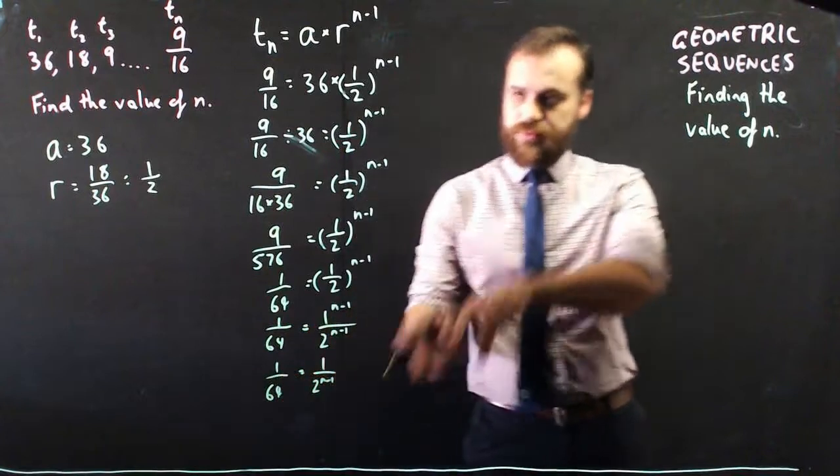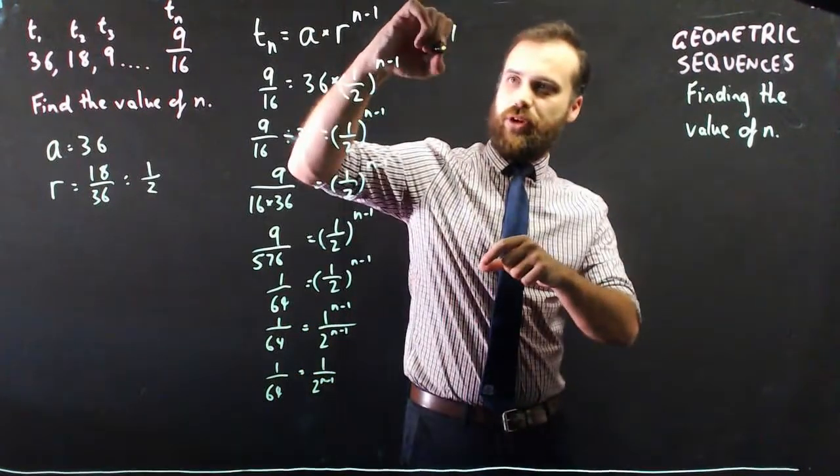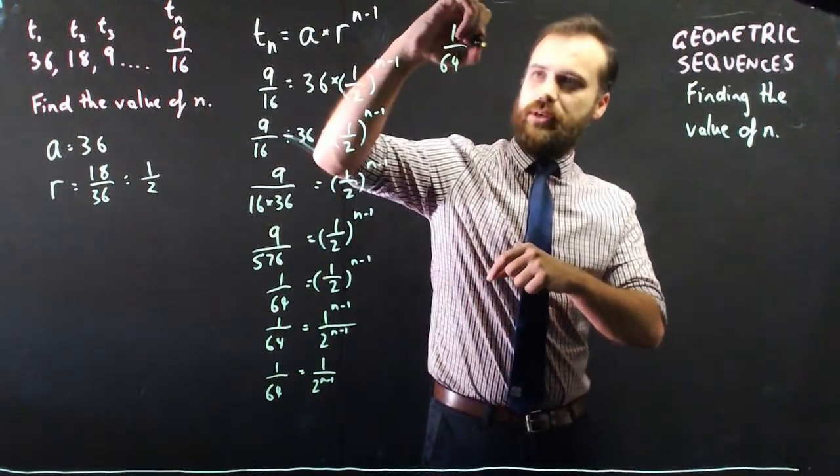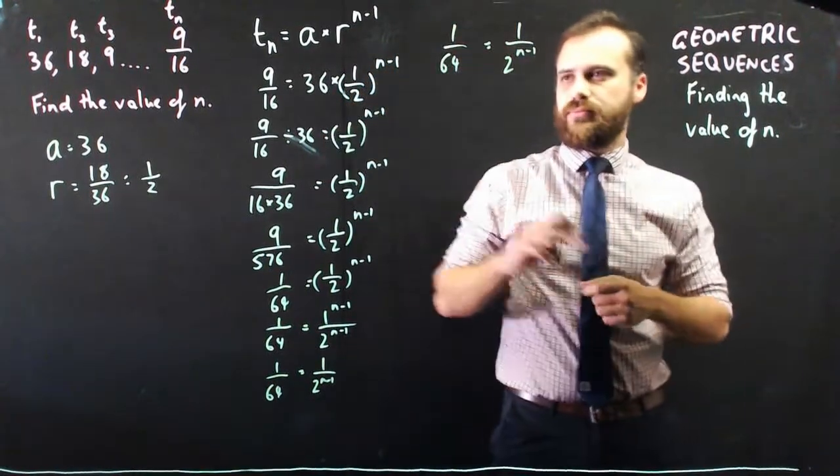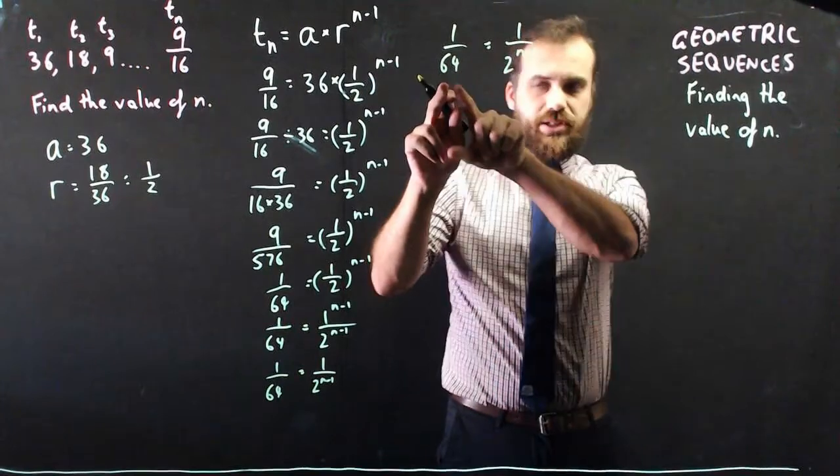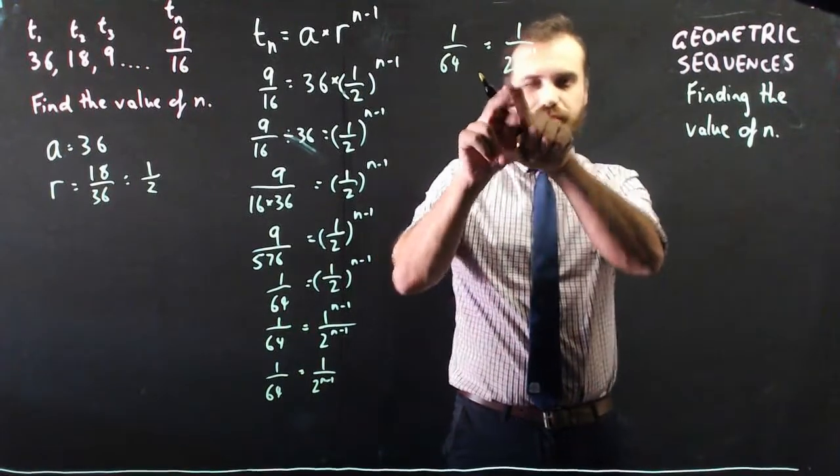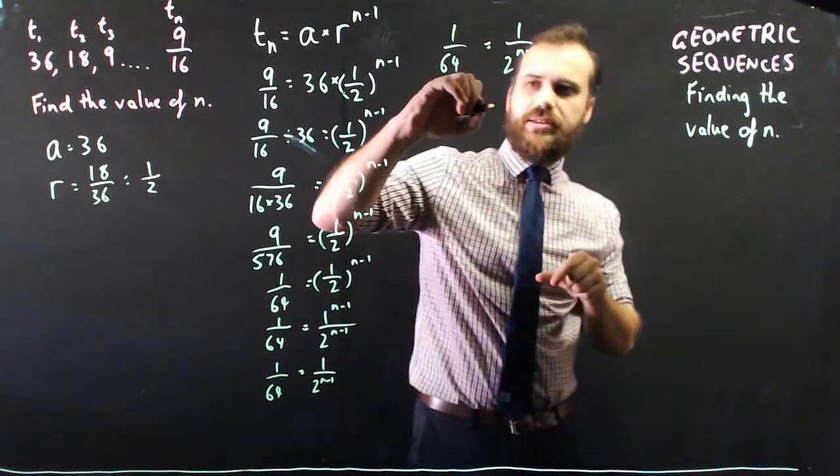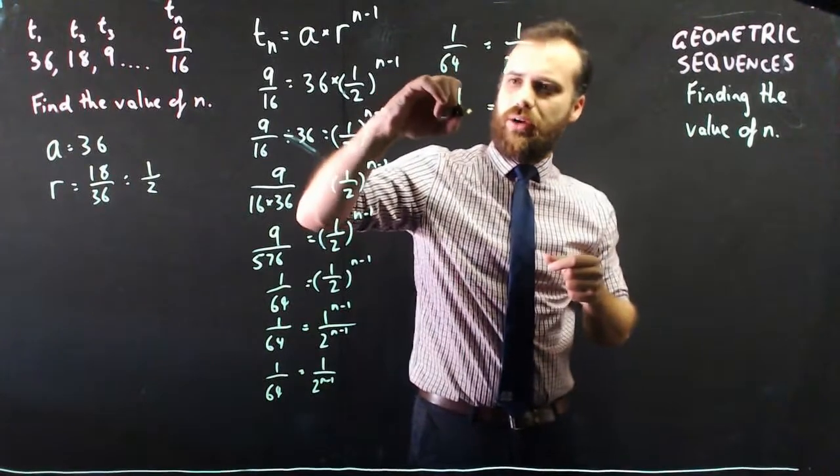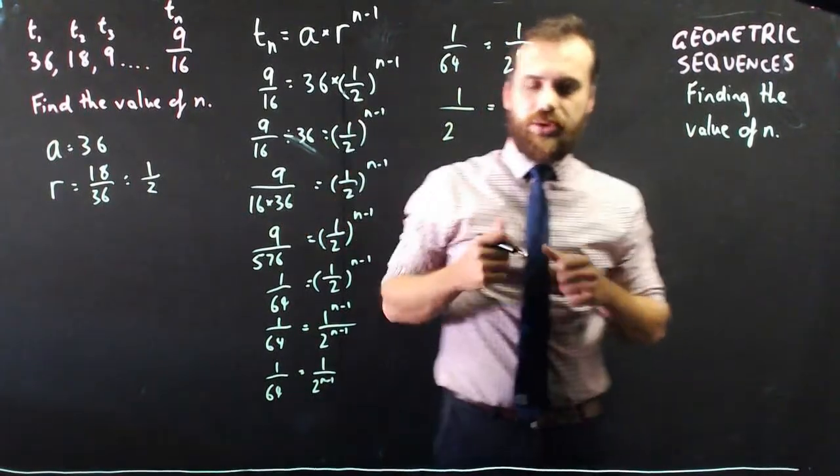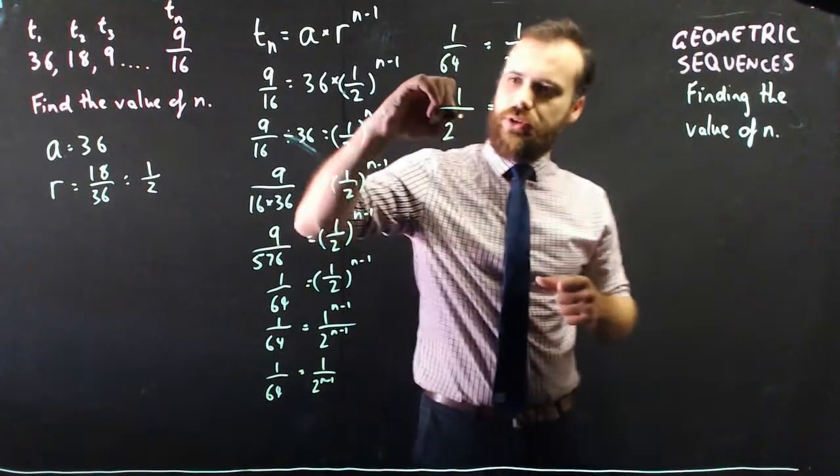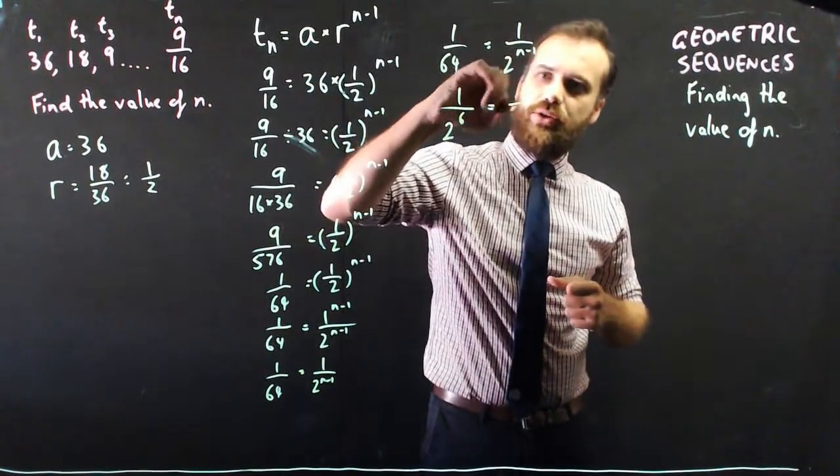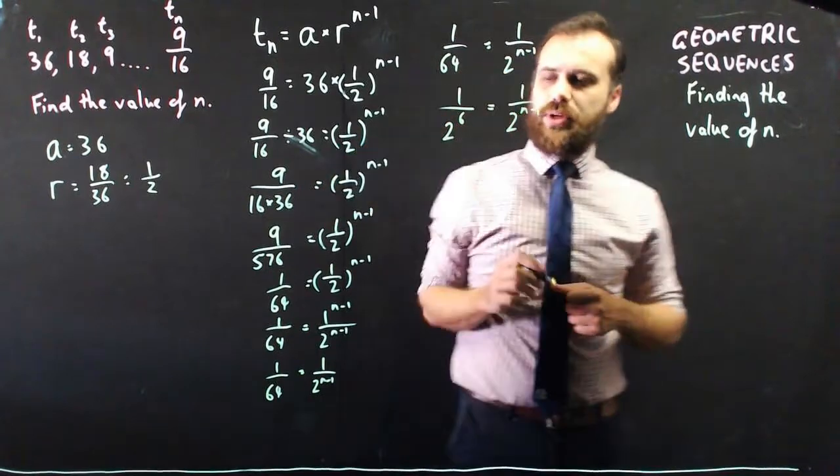Now here, I'll just rewrite that. 1 on 64 equals 1 on 2 to the n minus 1. We could rewrite 64 as a power of 2. That's called equating the bases and you've done that before. 1 on, now 2 to the power of 2, 4, 8, 16, 32, 64. 2 to the power of 6 equals 1 on 2 to the power of n minus 1.